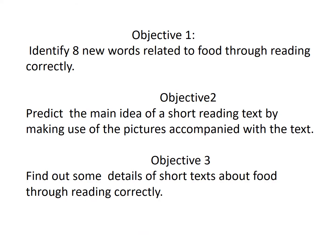The objectives of the lesson are: objective number one is to identify eight new words related to food through reading correctly; objective number two is to predict the main idea of a short reading text by making use of the pictures accompanied with the text; objective number three is to find out some details of a short text about food through reading correctly.